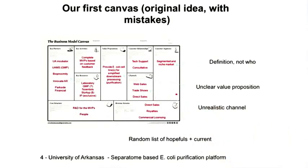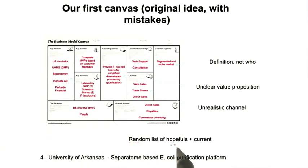And for partners, when they looked at it, it really kind of looked like a random list of hopefuls.